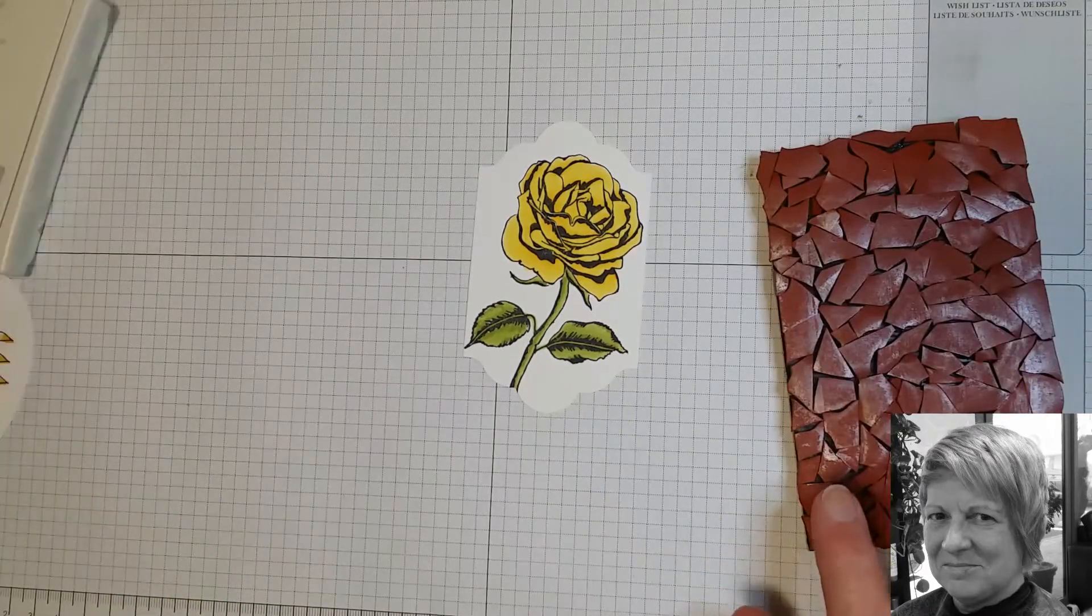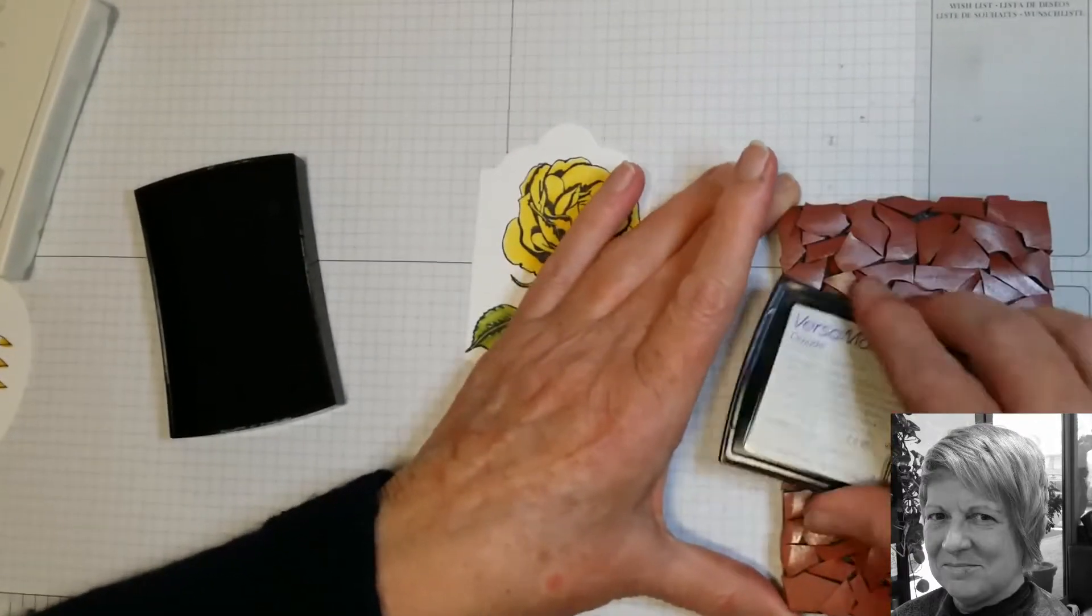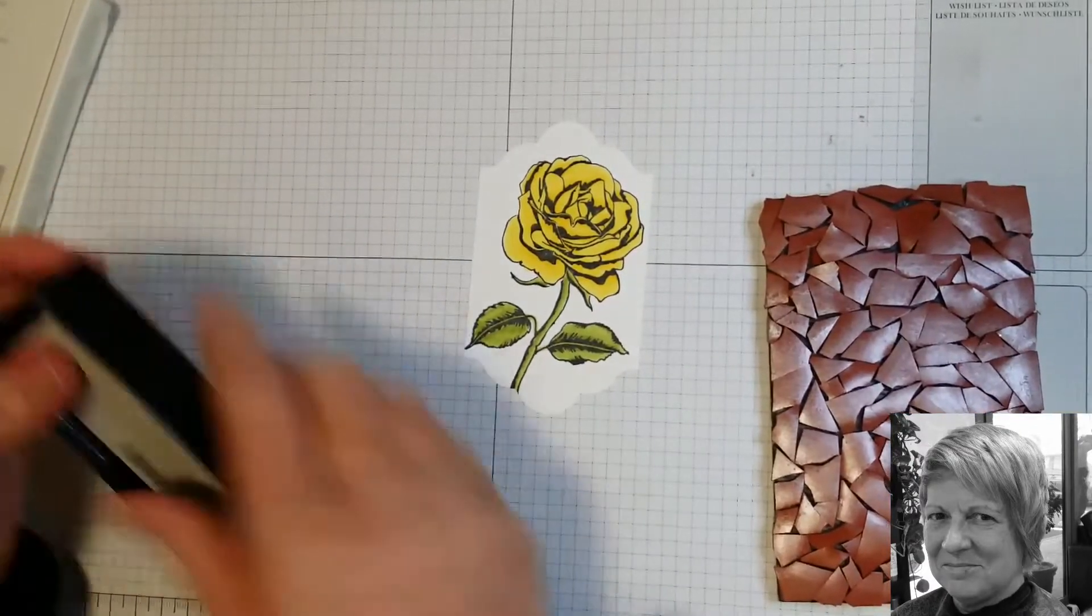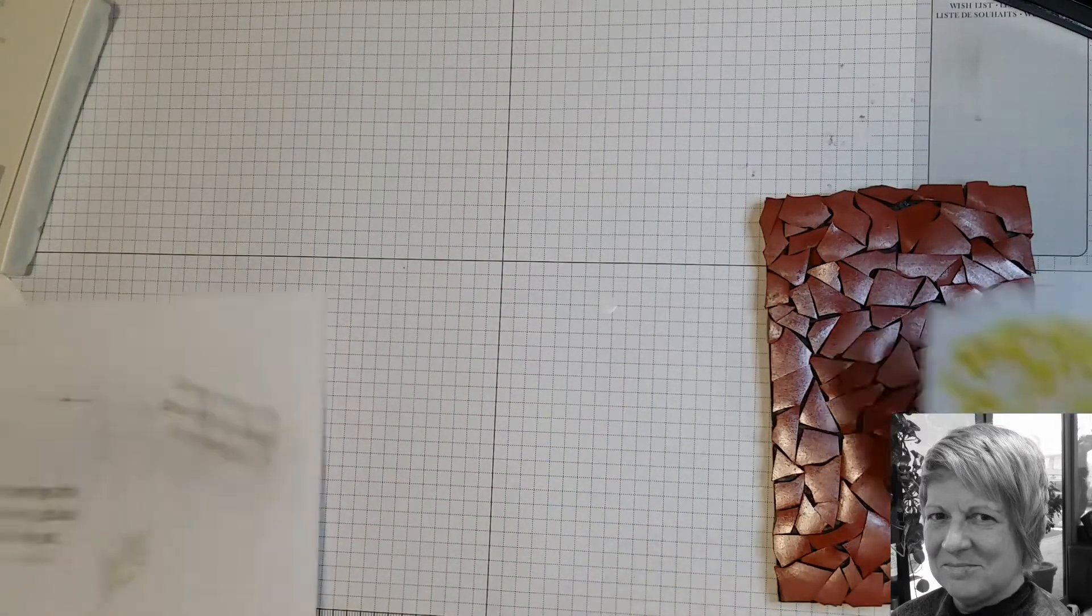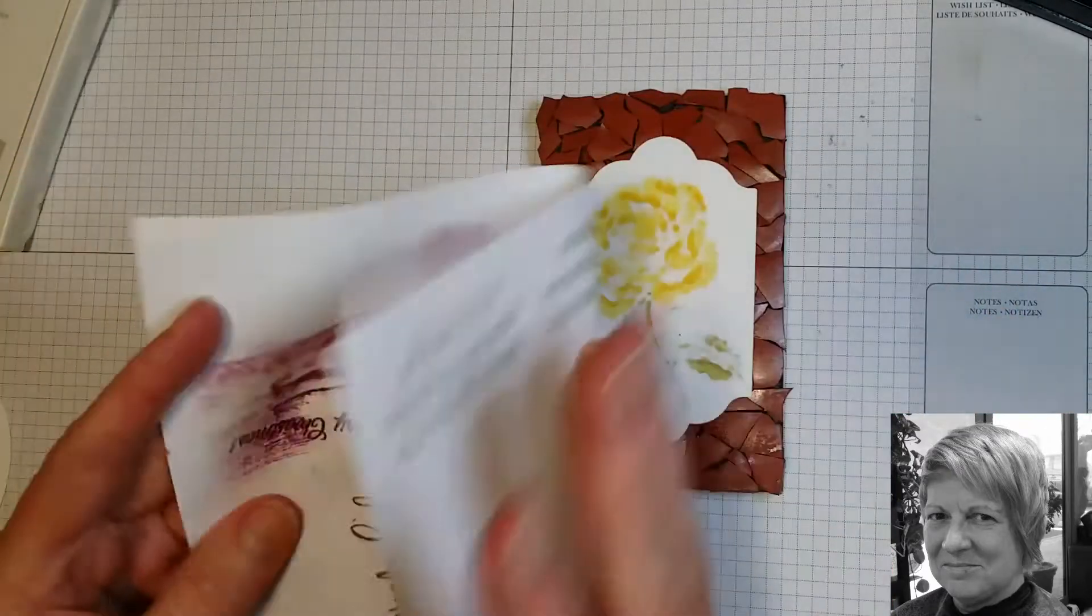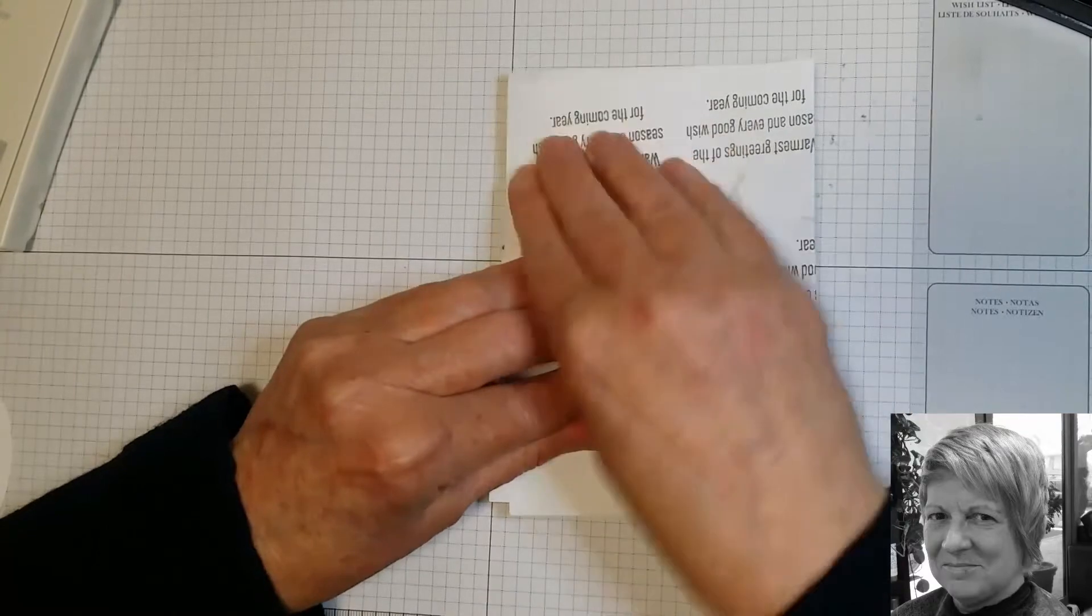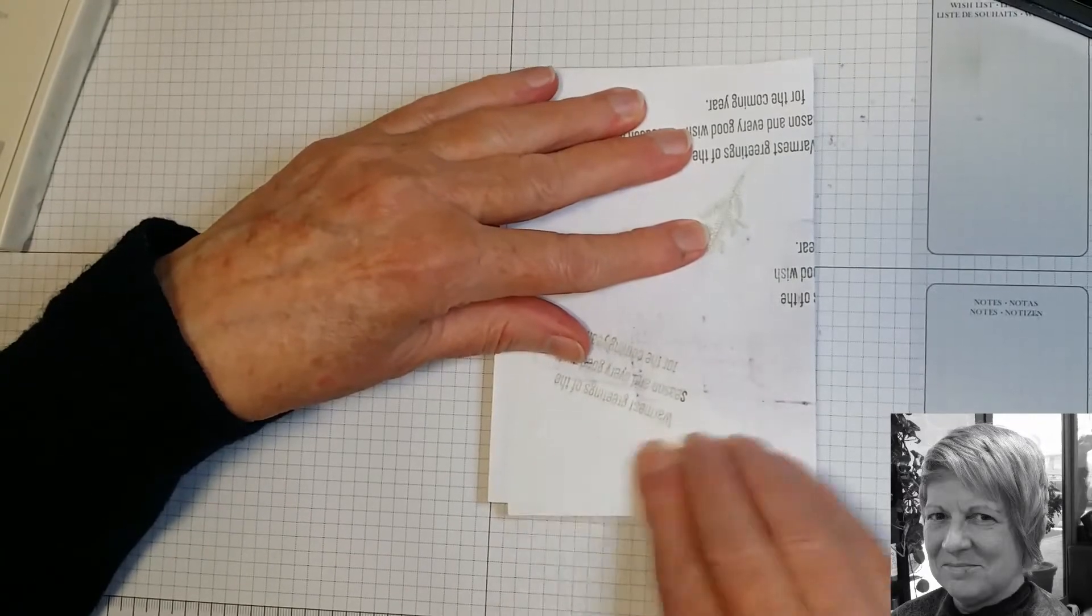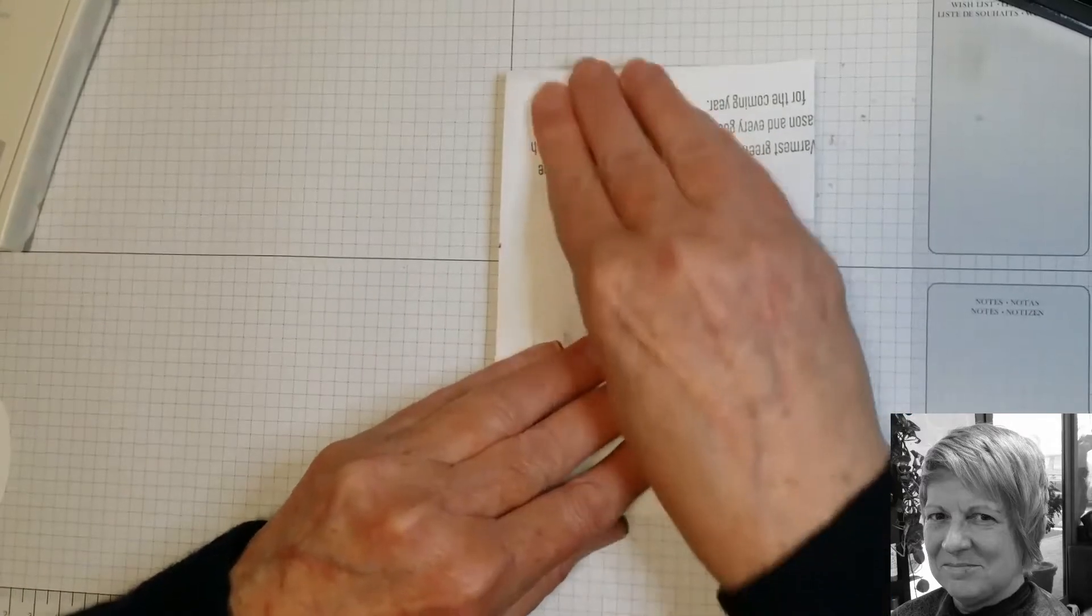The next thing we're going to do is get some Versamark ink and make sure that our mosaic stamp is well and truly covered. We're just going to put our image over there and just take a piece of scrap paper, put it over the top, and give it a good rub to get a good definition on there. Now you can do it the other way where you just put your cardstock on the table and put your stamp over it, but for this particular one I like to do it this way.